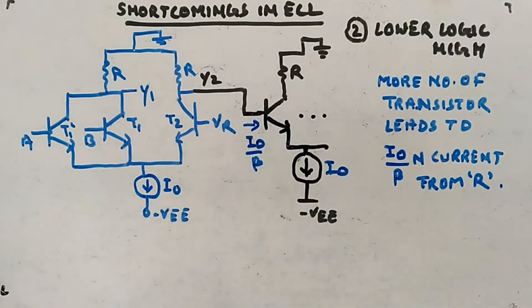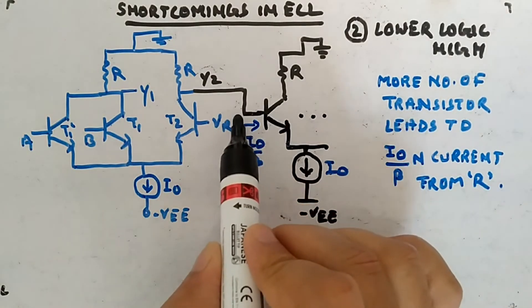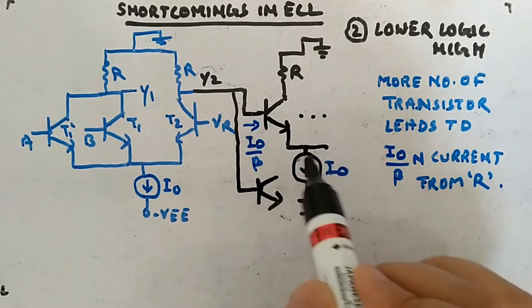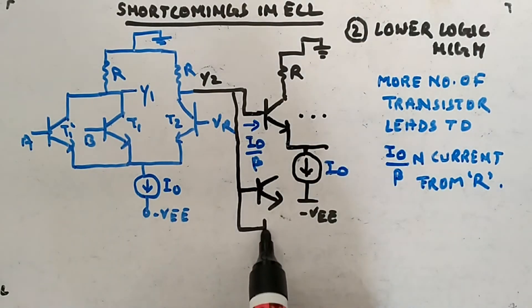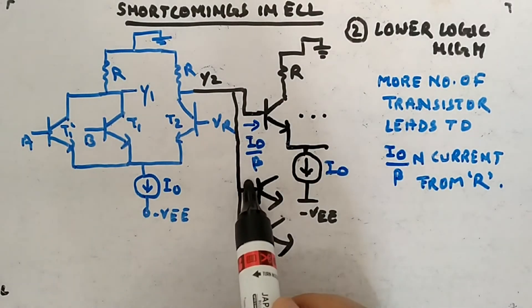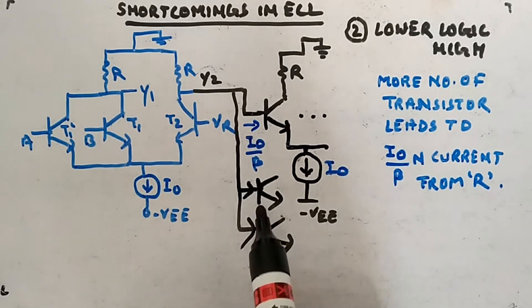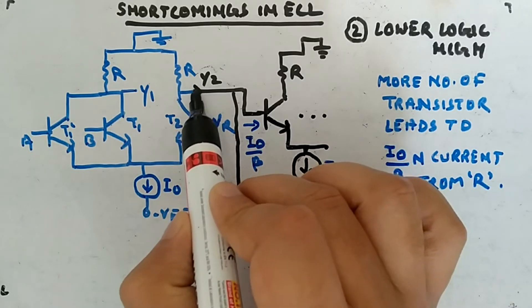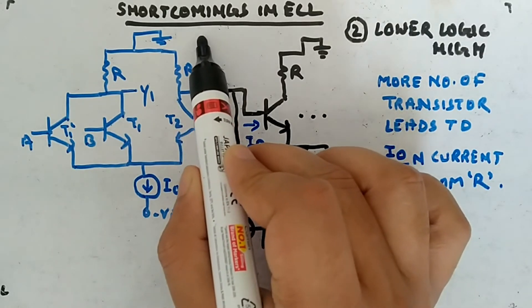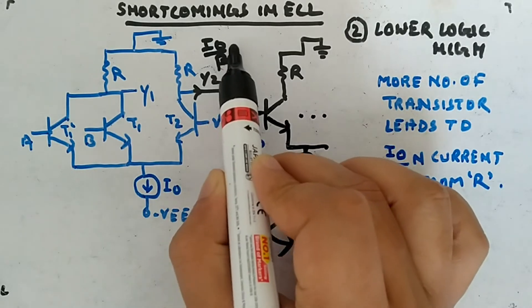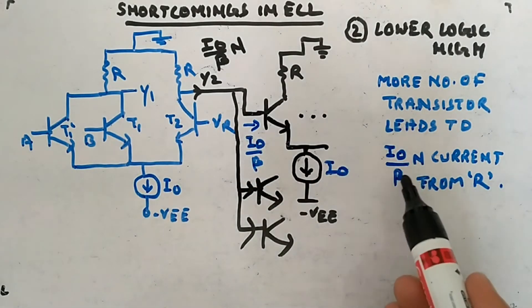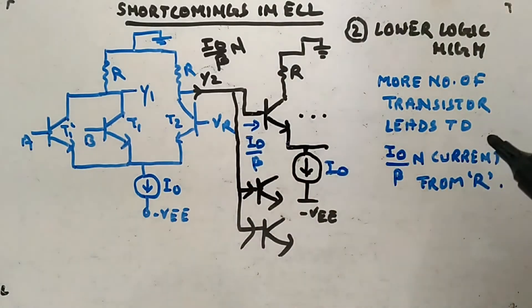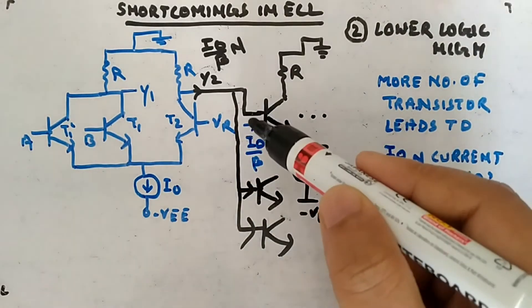Imagine similar scenarios with other fan outs as well. Like this is one transistor, then similar arrangement again and again. All of them will be driving this current I0 by beta. Finally, the current will be I0 divided by beta into n. That is what I have written.